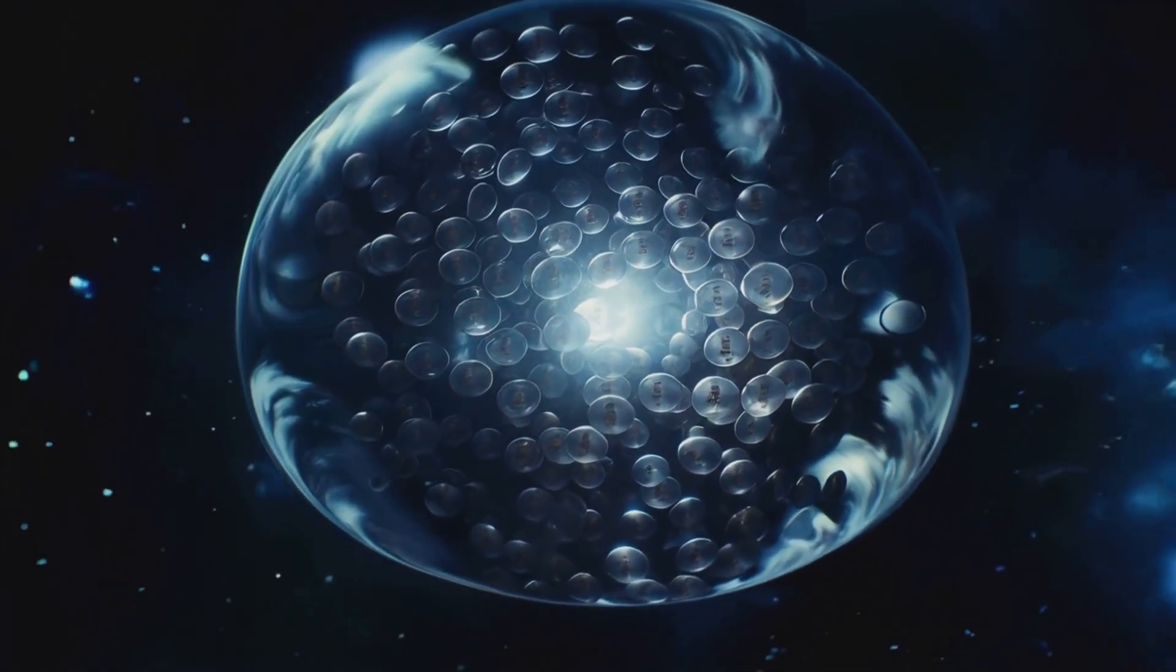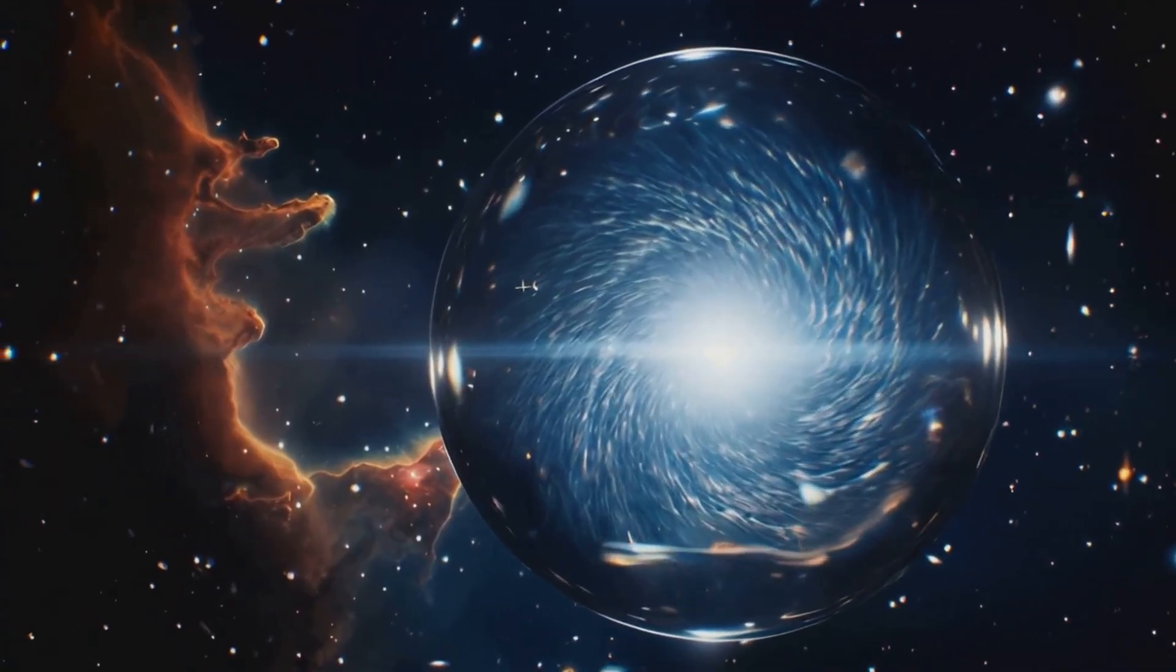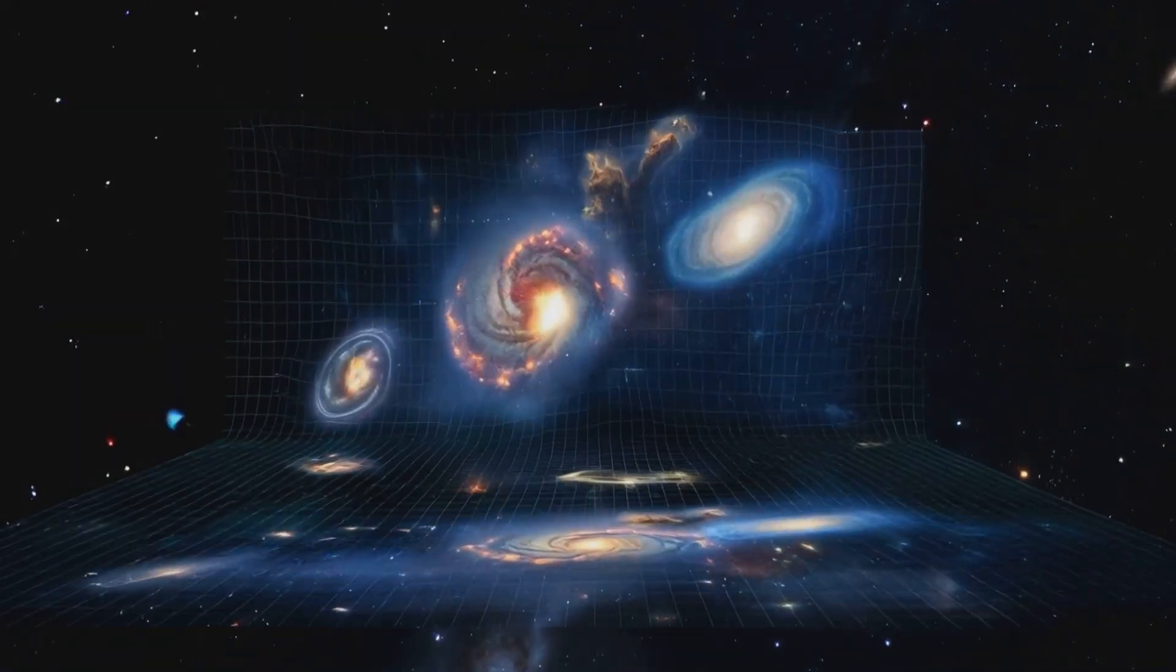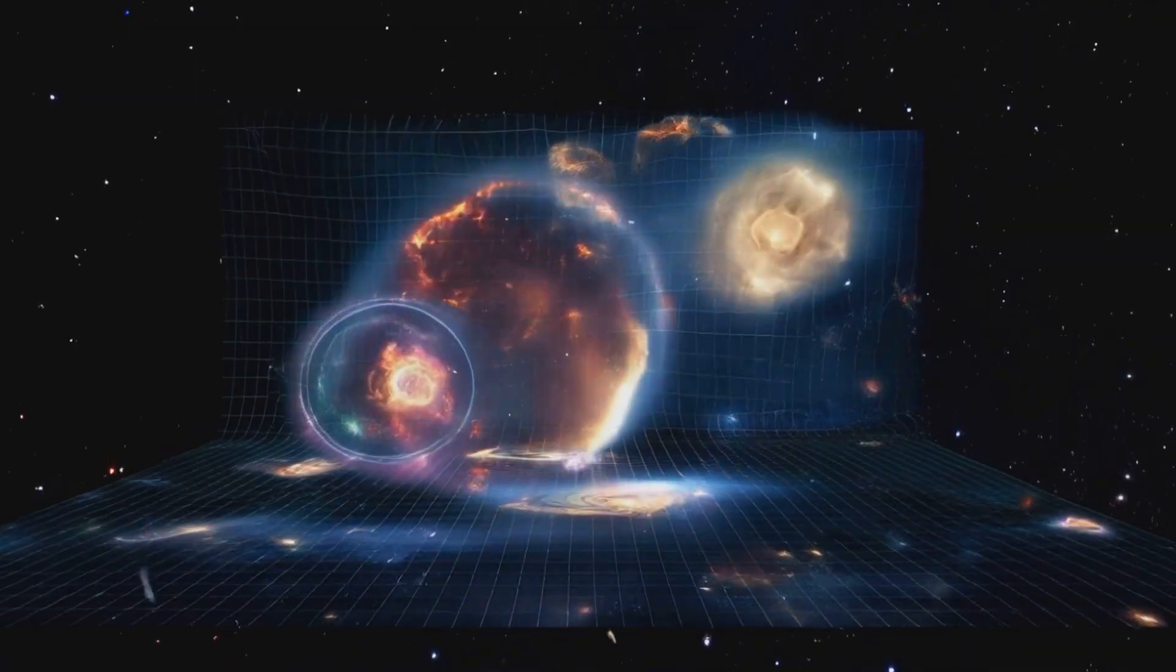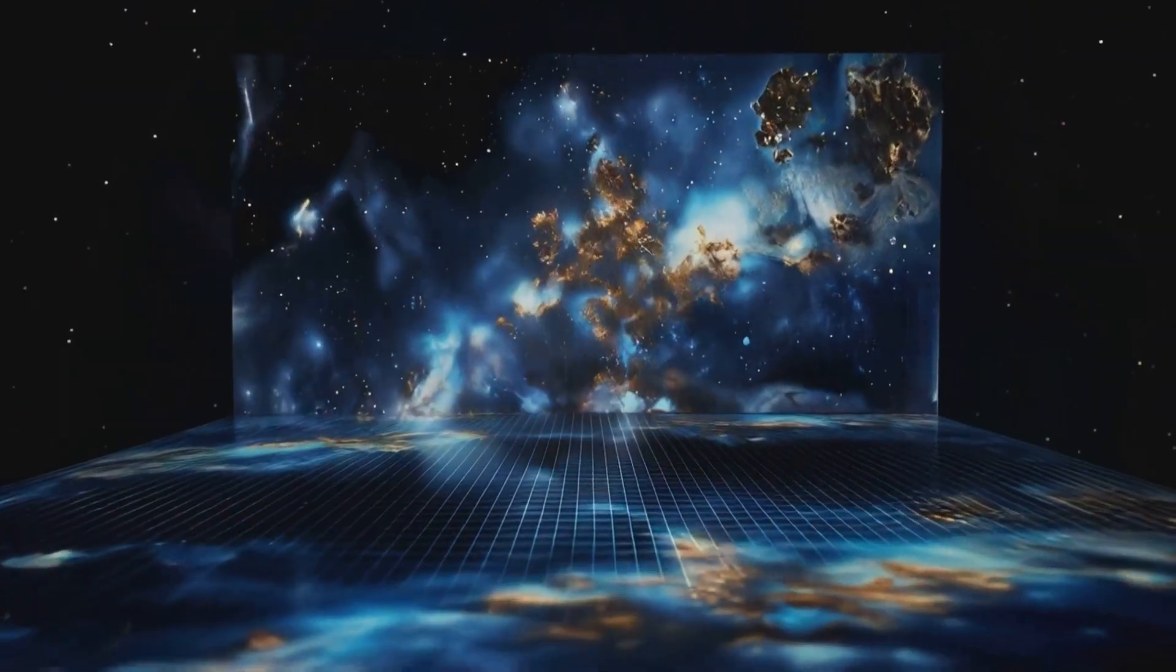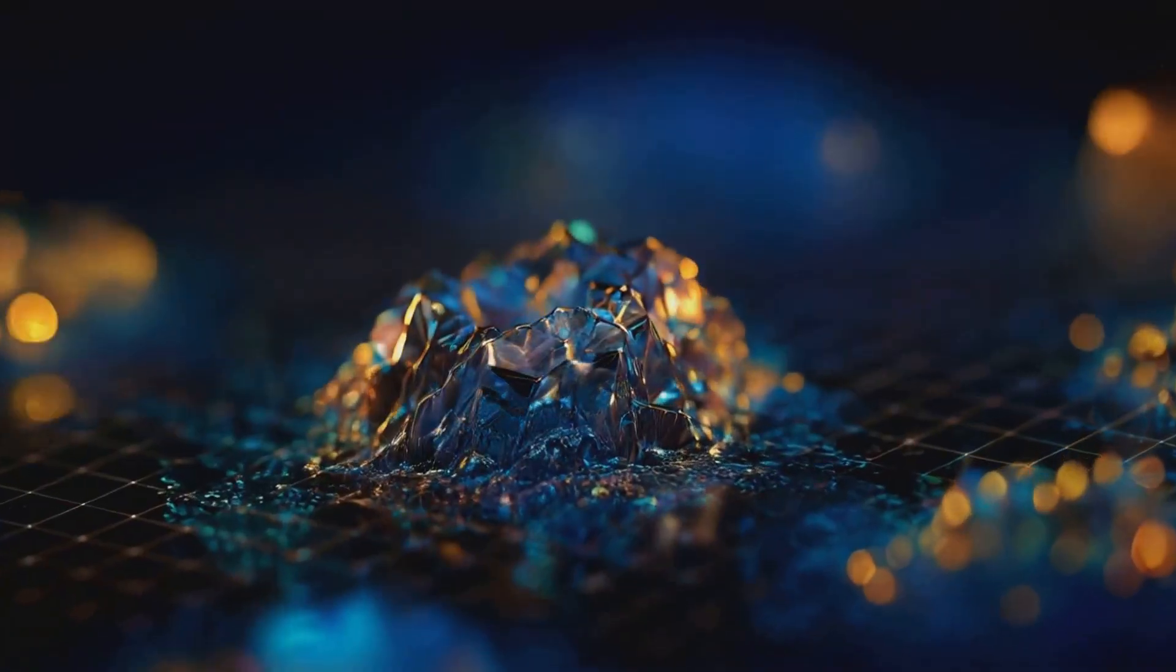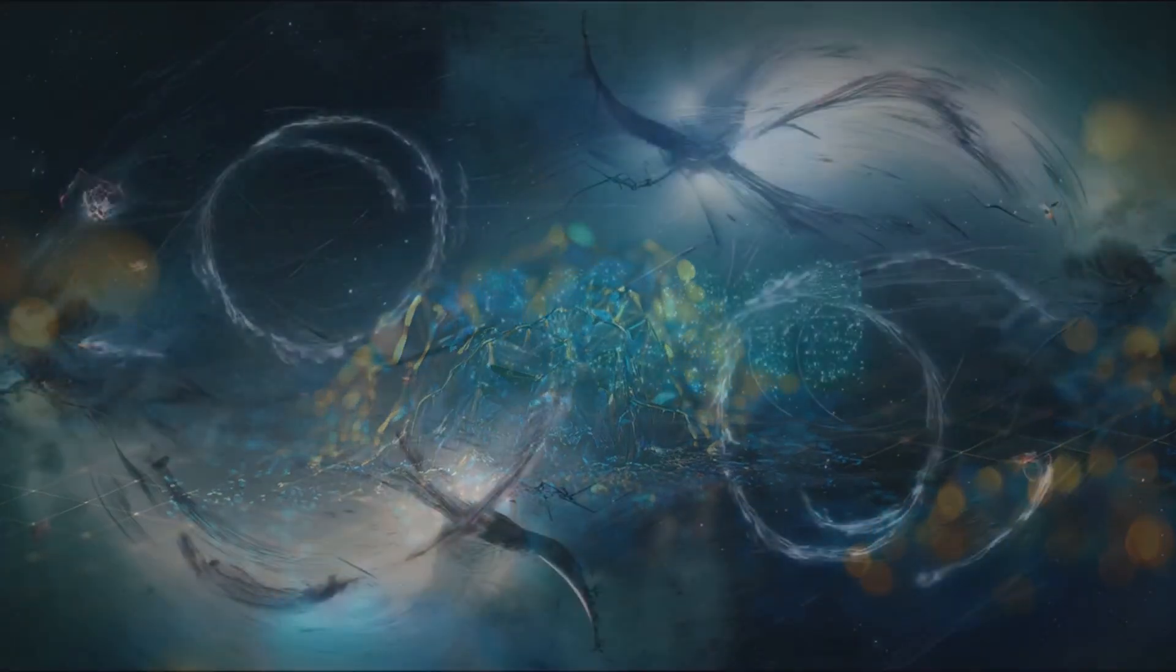Now, let's zoom out to the event horizon. Picture a glowing transparent sphere encircling our singularity. This isn't just any boundary. It's a volumetric display, a cosmic holographic screen. The quantum fluctuations from the singularity are magnified and projected here.